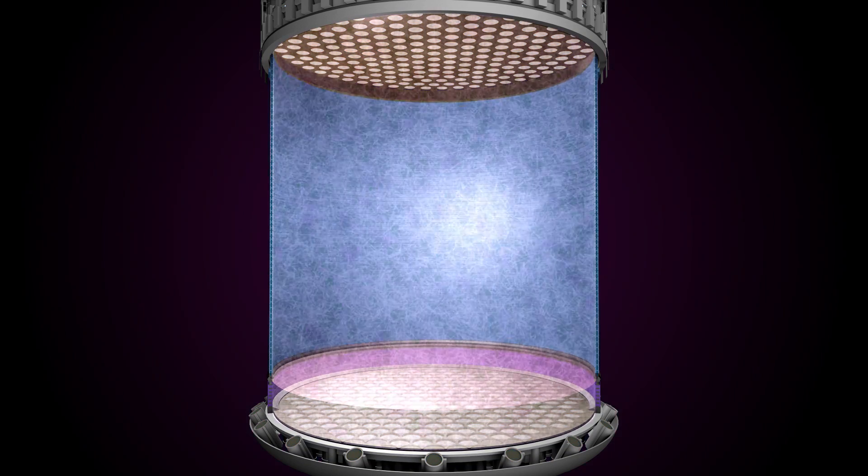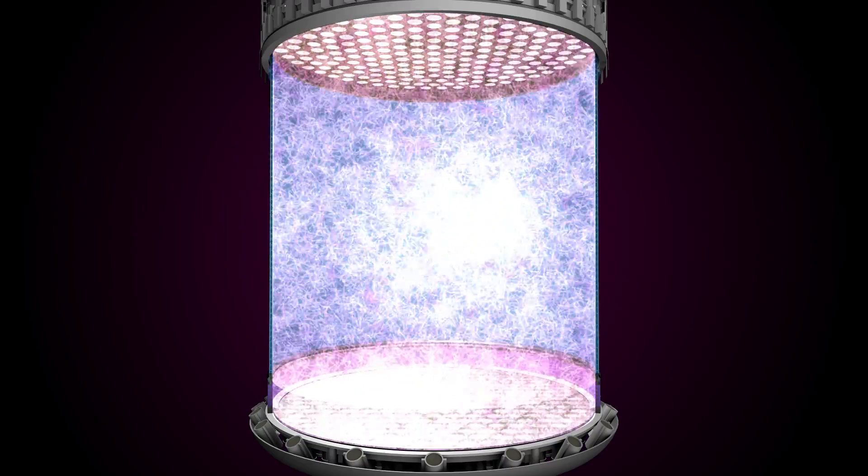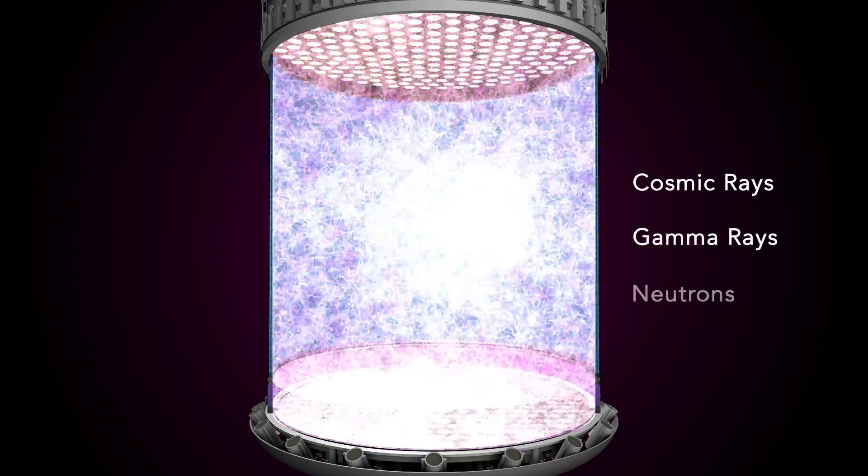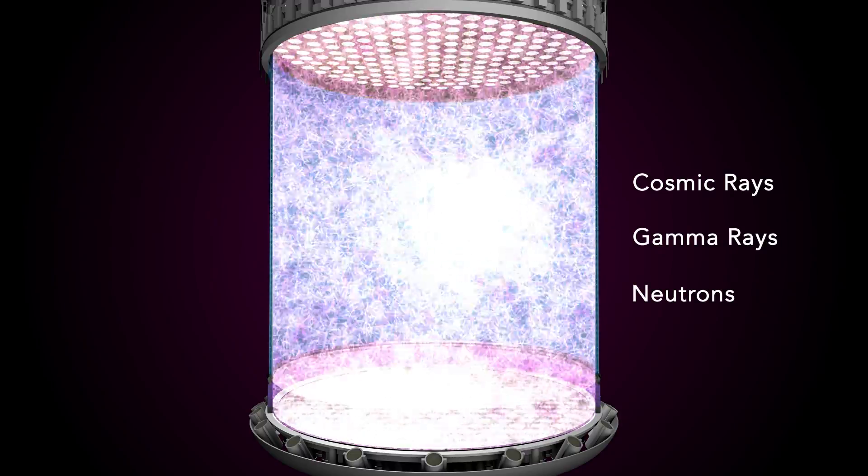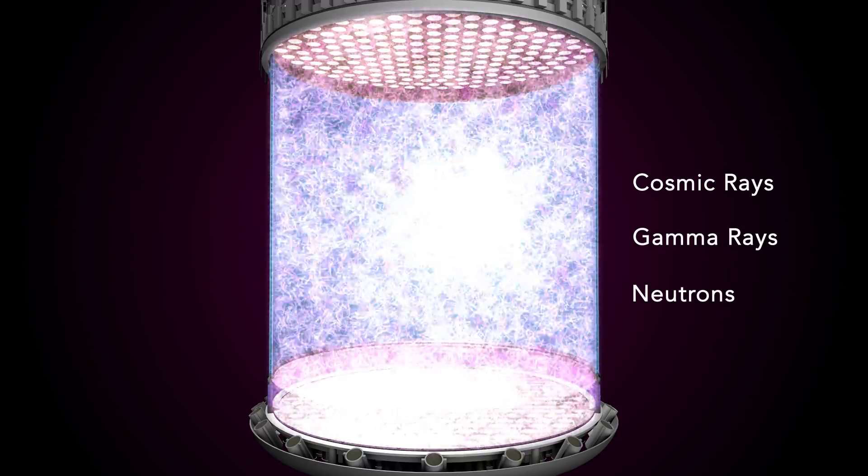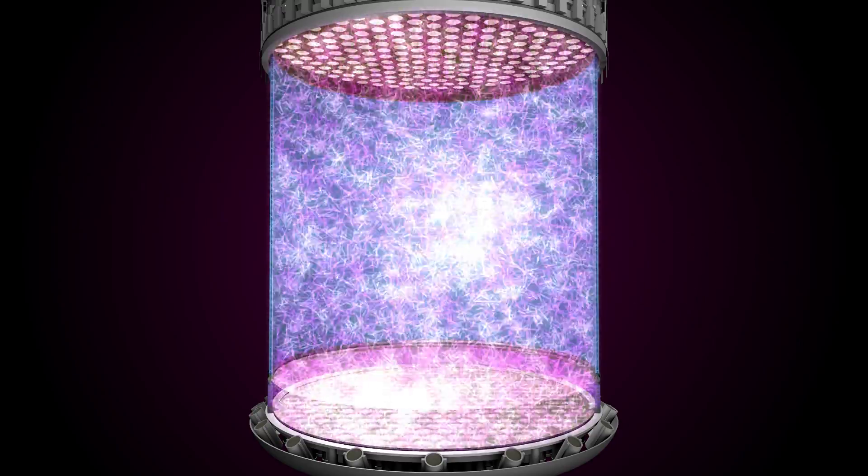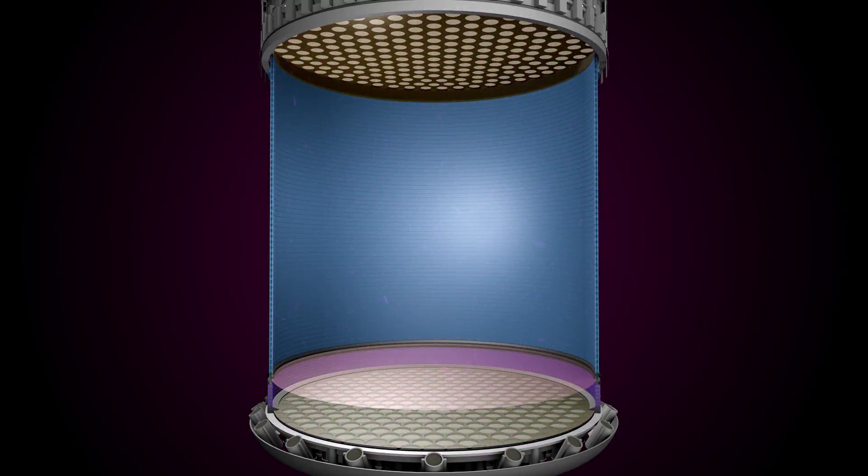LZ scientists will have to deal with a lot of background noise, such as unwanted signals from cosmic rays from space, and gamma rays and neutrons released in natural radioactive decays in the environment and detector materials. Therefore, the detector core will be surrounded by several layers that eliminate this noise as much as possible.